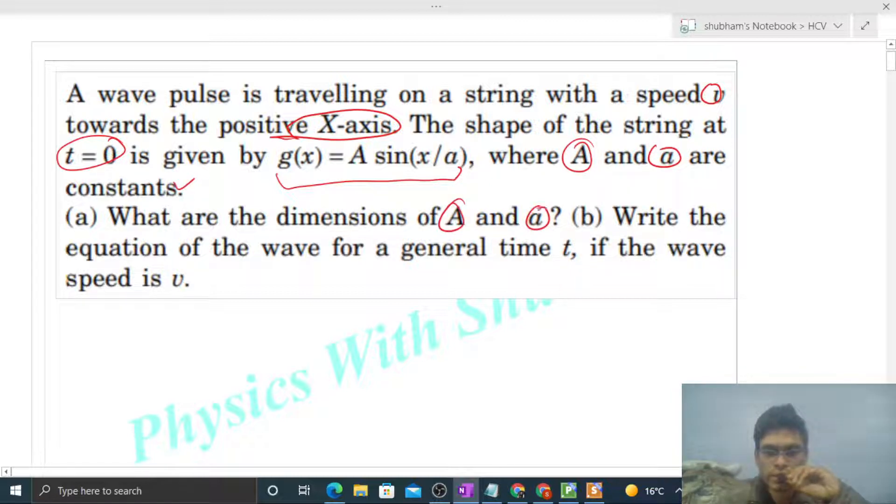What are the dimensions of capital A and small a? So this equation, my capital A is nothing but the amplitude of the wave, that is maximum possible displacement of the particles of the string. So A ka jo unit hoga, that is nothing but length, because A is nothing but maximum displacement.